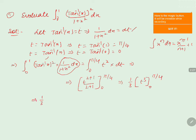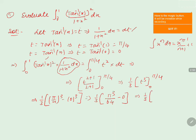Substituting the limits, we write 1 by 3 into (pi by 4) whole cube minus 0 whole cube. This gives 1 by 3 into pi cube by 64 minus 0. Multiplying 1 by 3 into pi cube by 64, we get pi cube by 192.